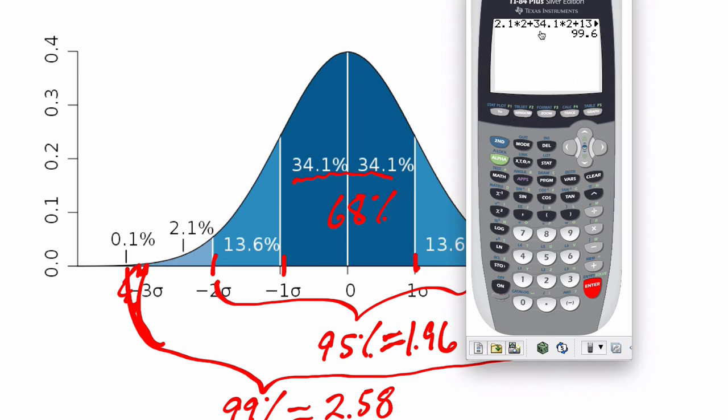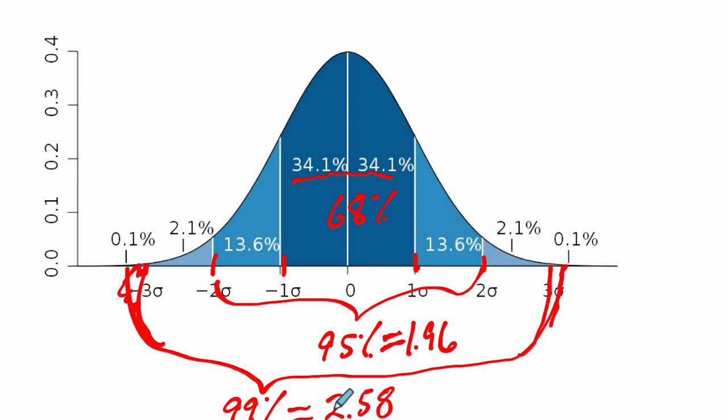A z-score of three would give you a confidence interval of over 99%. So when we say the confidence interval is lower than 99.6 but 99%, it makes sense that your z-score, which is the number of standard deviations, is actually less than three. It's about 2.58.